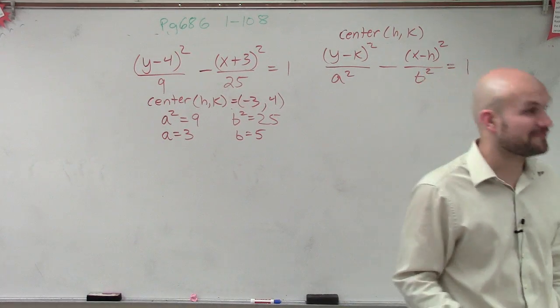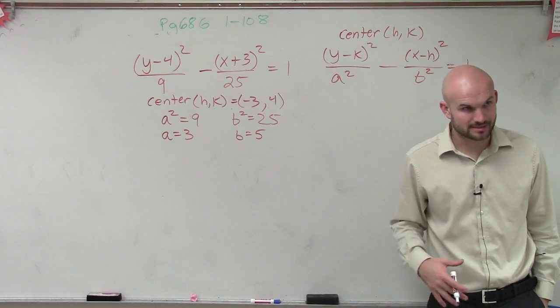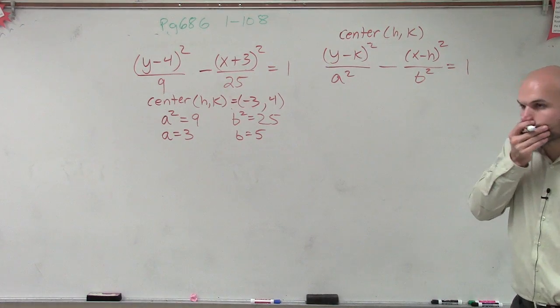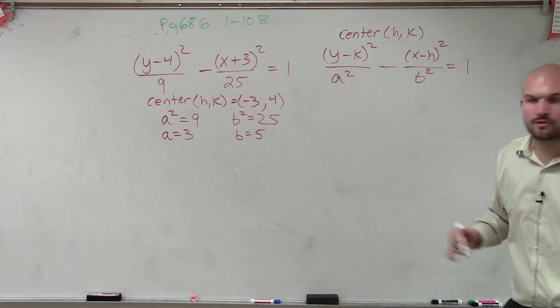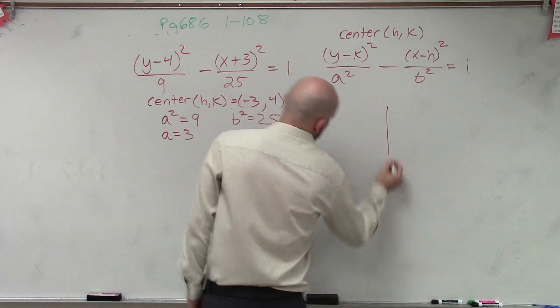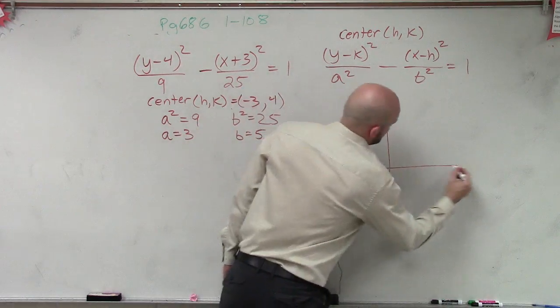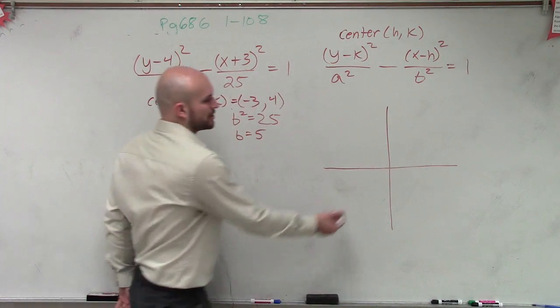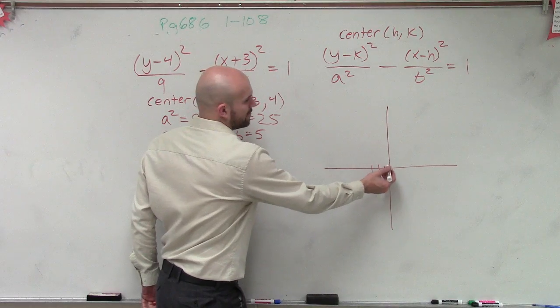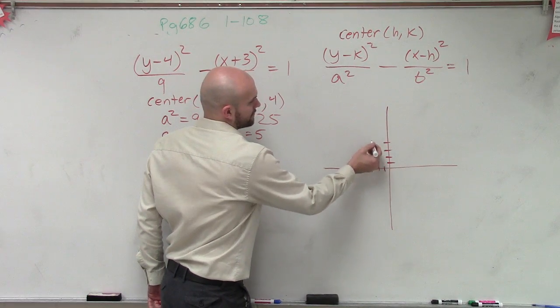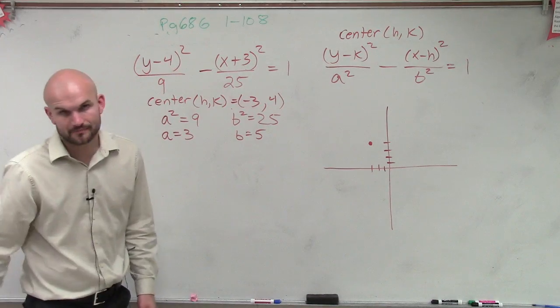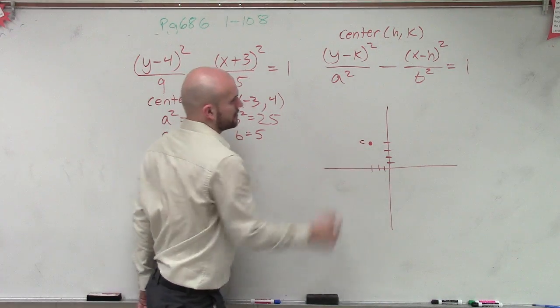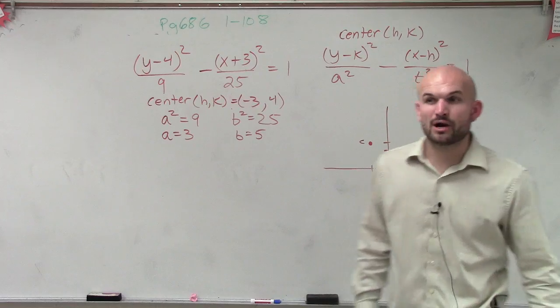So remember, we're going to be trying graphing this. So to finish up graphing this, let's just plot what we know right now, and then we'll get to the rest of it. So the first thing I can do is plot the center, which is negative 3, 4. So I go over negative 3, 1, 2, 3, up 4, 1, 2, 3, 4. That's my center.